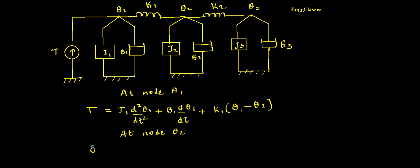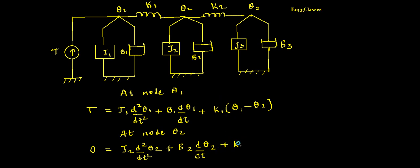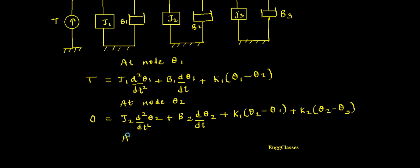At node theta2, the equation is: 0 = j2 · (d²θ2/dt²) plus b2 · (dθ2/dt) plus k1 · (θ2 − θ1) plus k2 · (θ2 − θ3).